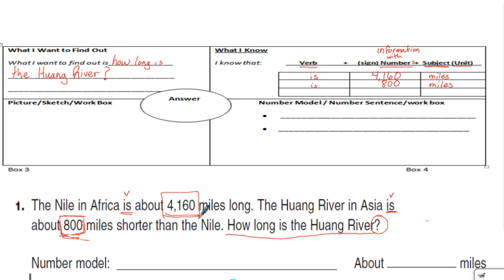You might ask yourself why we're filling all this out. When we went over the steps to solve a problem, we had to understand what we had to do. By organizing our work — which is part of the plan — we will be able to understand what we have to do. Now, box three: you can put a picture, a sketch, or show your work.